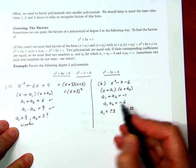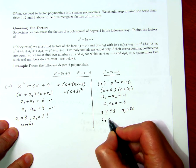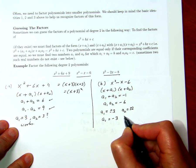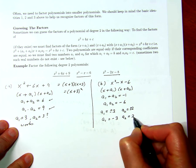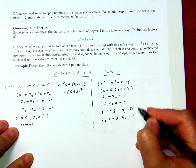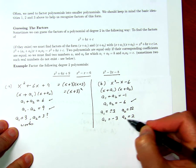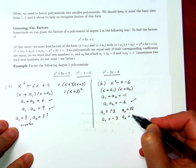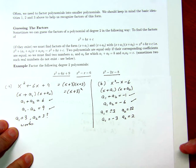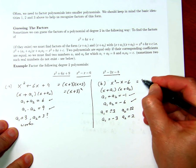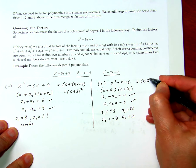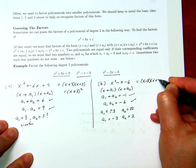I'm going to try a1 equals negative 3 and a2 equals 2. Then the product is negative 6 and the sum is negative 1, so that works. And so this is equal to x minus 3 times x plus 2.